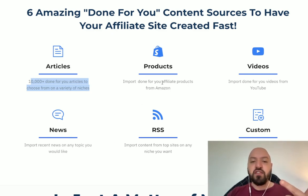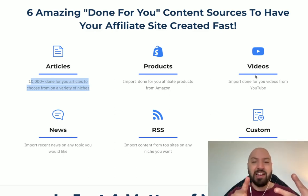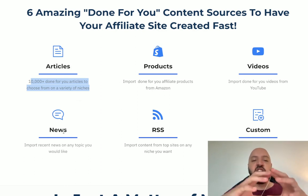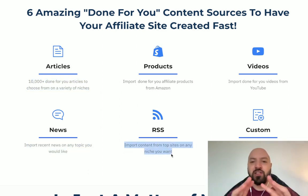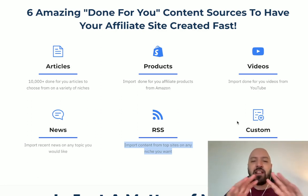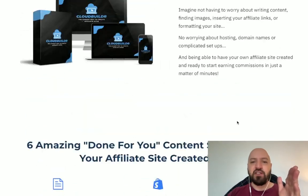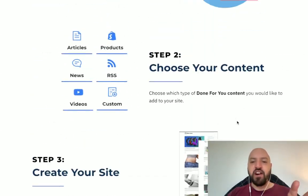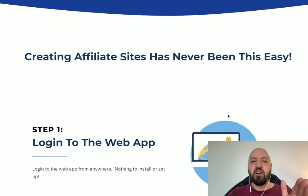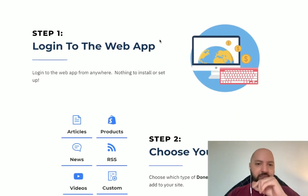You can import done-for-you affiliate products from Amazon, and done-for-you videos from YouTube. You'll see all this in my Cloud Builder demo in a moment. You can turn it into a news site with articles from professional journalists, import recent news, import content from top sites in any niche you want, and create custom posts and pages. In under five minutes you can create wonderful affiliate sites.